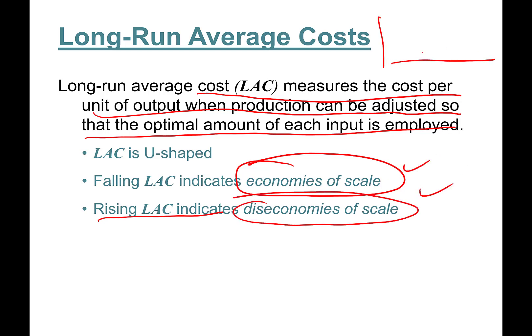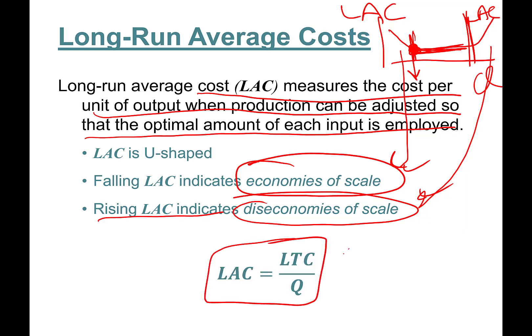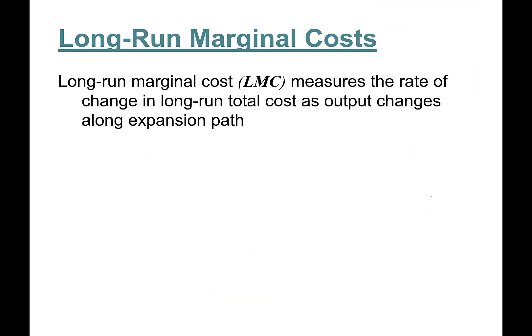So here you have economies of scale in this region. When it starts going up, this is diseconomies of scale. This is the constant returns to scale, and this point where economies of scale is exhausted will be minimum efficient scale. Long-run average cost is long-run total cost divided by quantity, just like the short-run cost.